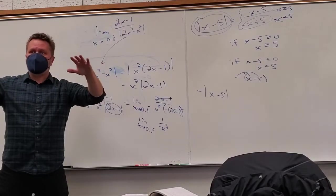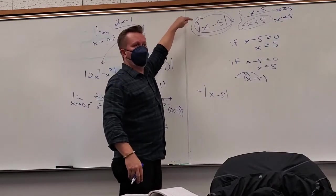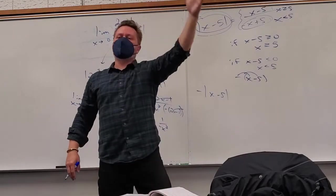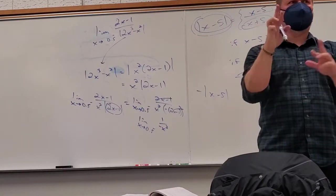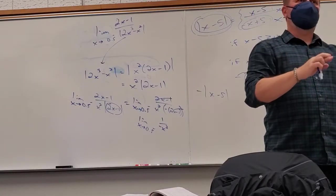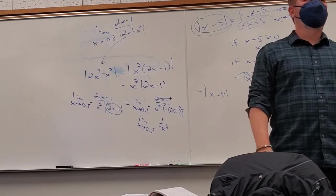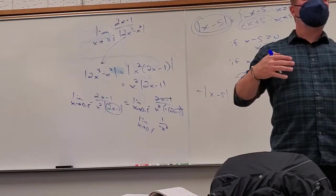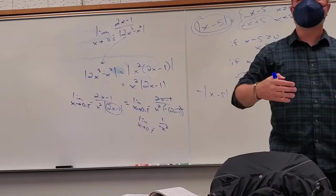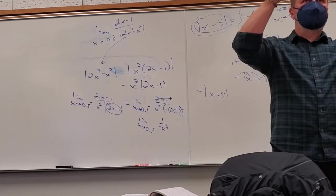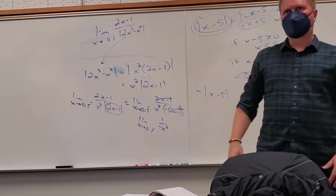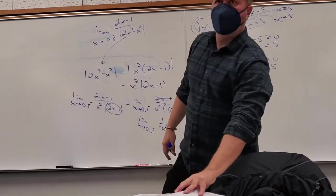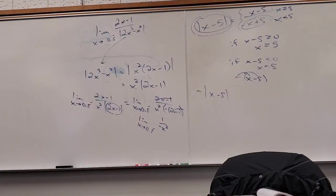These absolute value limits are definitely some of the freakier problems, especially if you forgot how they really work. Just saying 'it makes things positive' is not technically good enough. You need to understand the piecewise definition. Does that make sense? Do you see how to attack a problem like this?